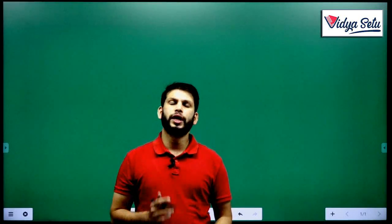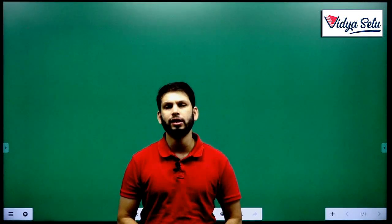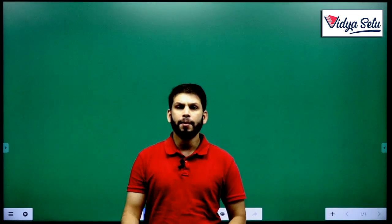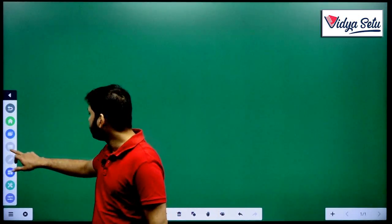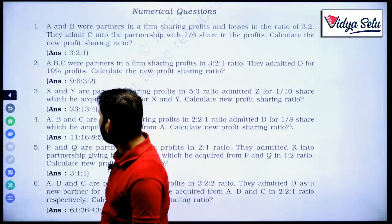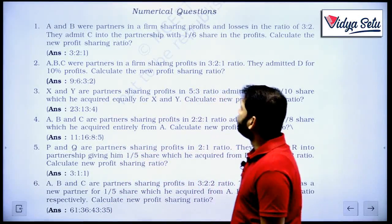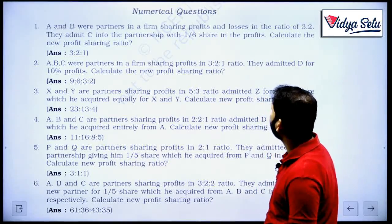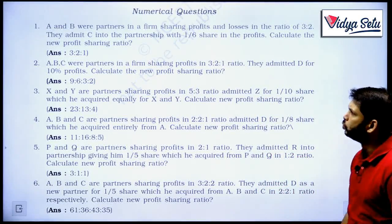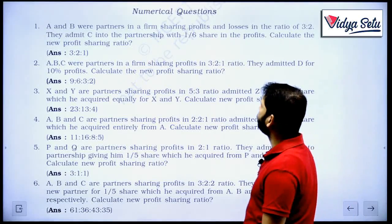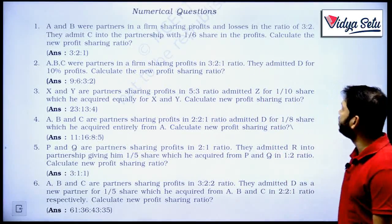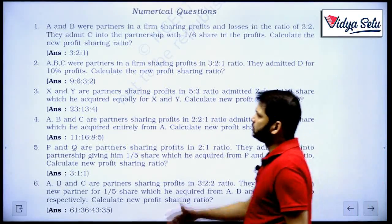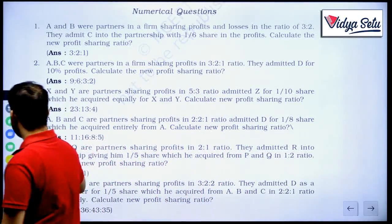Hello everyone, today we are starting with our numerical questions of chapter number 3, admission of a partner. Let's look at the questions from our NCERT book. The first question is, A and B were partners in a firm sharing profits and losses in a ratio of 3 to 2. They admit C into the partnership with 1/6 share in the profits. Calculate the new profit sharing ratio.